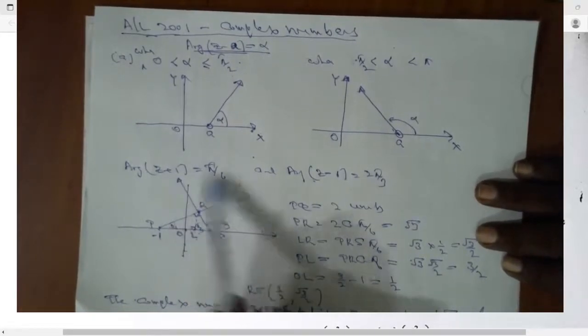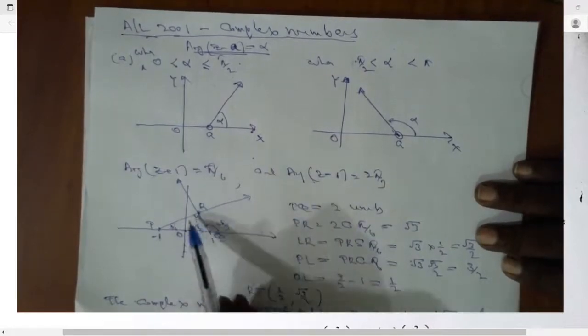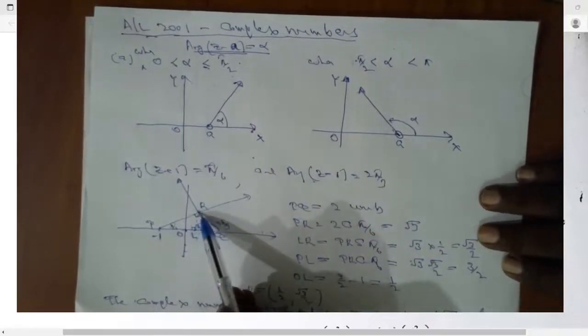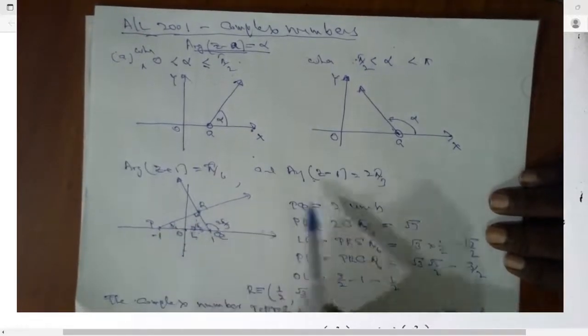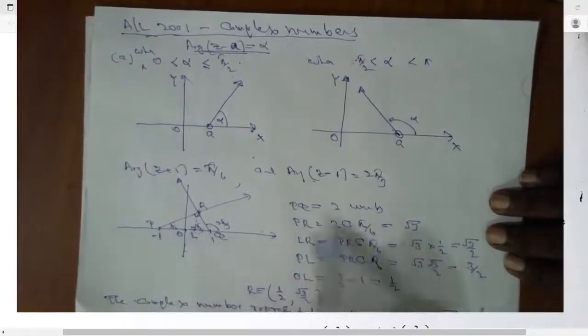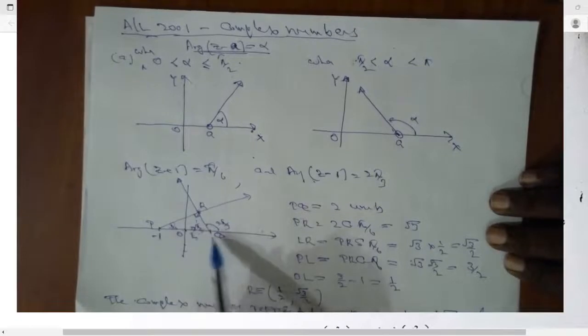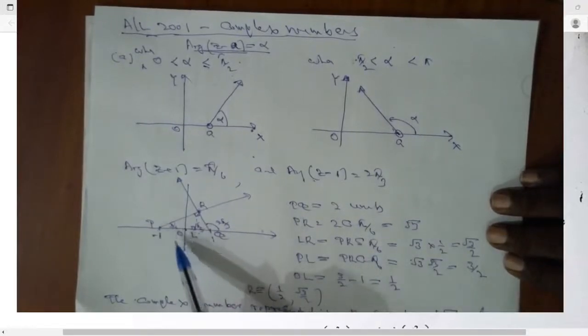Now you want to find, but z satisfies both of the lines, means there is a point of intersection. When you find point of intersection, you can find PQ. PQ is length 2 units. PR is 2 cos 5 pi by 6, root 3. Then LR,